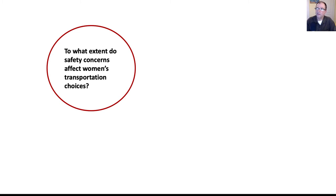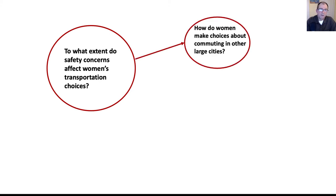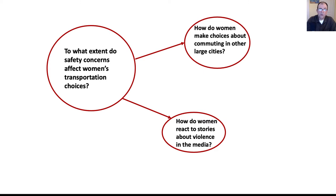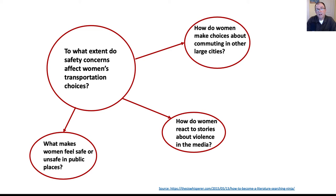There are a number of ways to do mind mapping, and a lot of online tools have been developed in the last few years. She started to develop some related questions: how do women make choices about commuting in other large cities? How do women react to stories about violence in the media? And what makes women feel unsafe or safe in public places? Those were all related questions she thought might be useful to look at in her research.